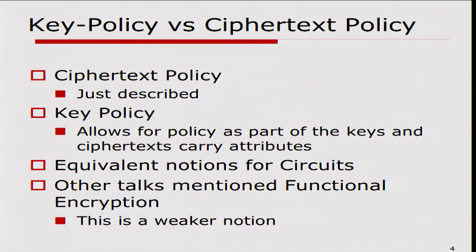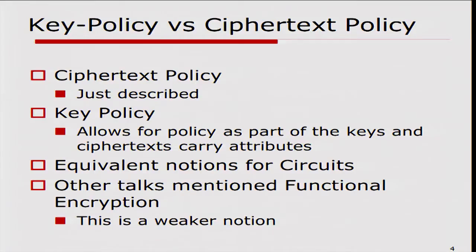The notion I just described is called ciphertext policy-based attribute-based encryption, because the policy or the circuit as to who can decrypt is embedded as part of the ciphertext, and the keys are associated with attributes. We could similarly define key policy attribute-based encryption, where the policy is part of the secret key and the attributes go along with the ciphertext. Invoking universal circuits, it's not hard to see that both notions are equivalent, and I'm going to restrict myself to key policy attribute-based encryption for this talk.